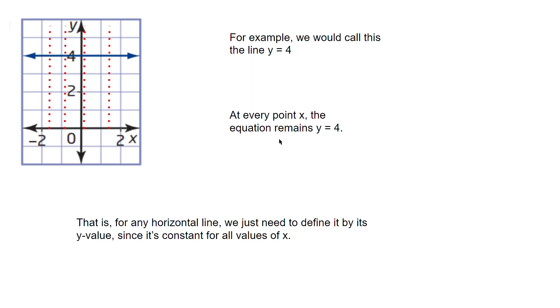All that to say, if we have a horizontal line — a line with no slope — we just need to define it by its y value, since it is constant for all values of x. y does not change.